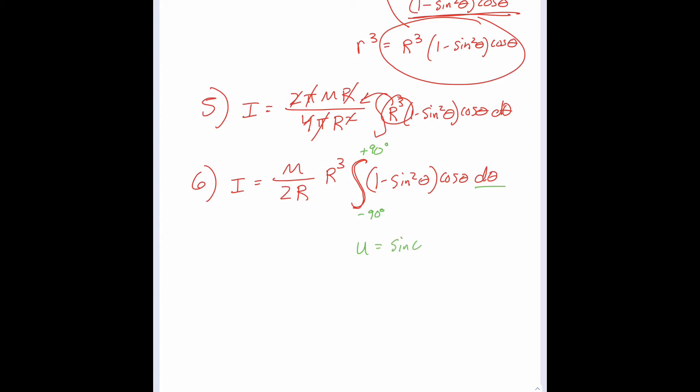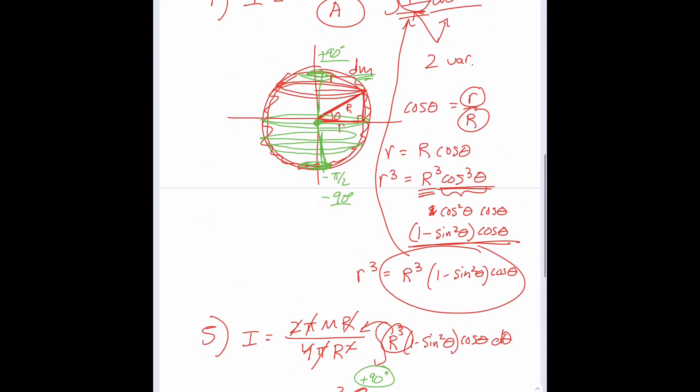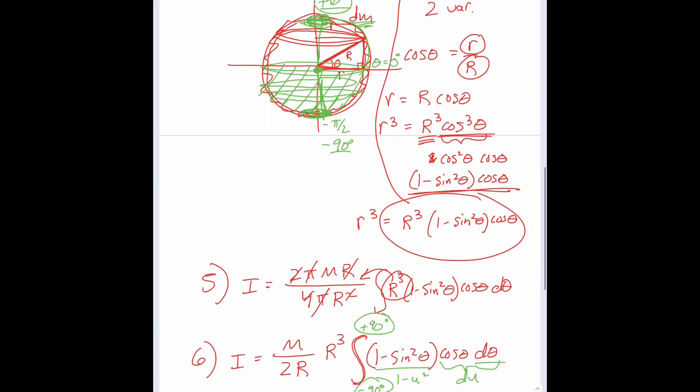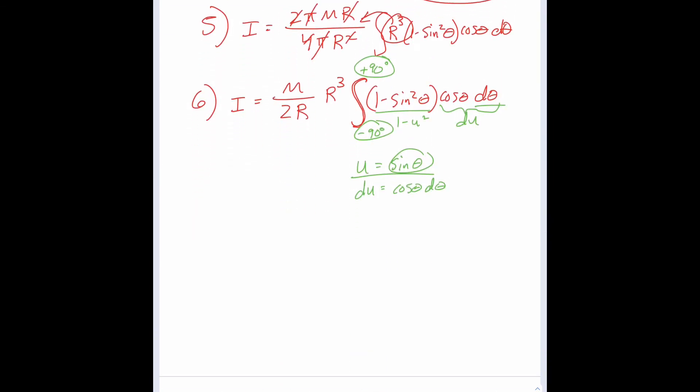Let's let u equal sine θ. Then du is cosine θ dθ. That's nice, we have a cosine θ dθ, so that can all be substituted with du. And then 1 minus sine² would be 1 minus u². And as long as we're letting u equal sine θ, the sine of negative 90 degrees would give us negative 1, and the sine of positive 90 degrees would give us positive 1. Or we could do it like this: instead of adding up rings all the way from the bottom to the top, we could just use symmetry and just go from θ equals 0 degrees up to 90.